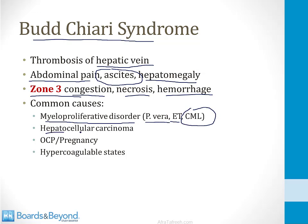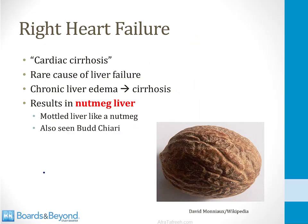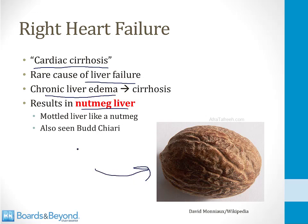You can also see Budd-Chiari syndrome in hepatocellular carcinoma, where the liver tumor compresses blood flow into the hepatic veins. It has also been associated with oral contraceptive use, pregnancy, and many hypercoagulable states. If you have right heart failure, you can develop cirrhosis of the liver because blood backs up from the right ventricle through the inferior vena cava and swells the liver — this is often called cardiac cirrhosis. It characteristically makes the liver look like a nutmeg, with a mottled appearance. This can occur from any cause where the liver is chronically swollen, and can also be seen in Budd-Chiari syndrome.